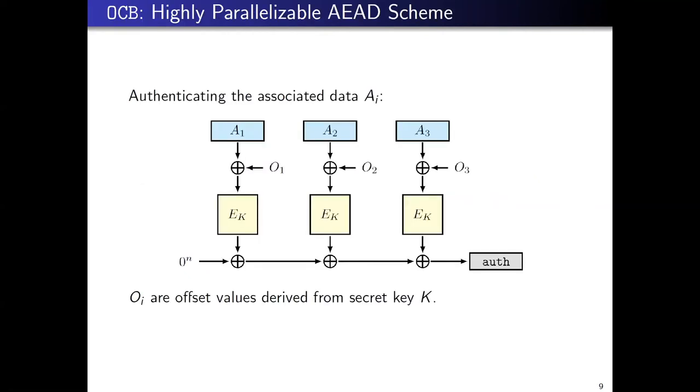First I'll talk about OCB mode. It's highly parallelizable. As you can see here, to authenticate the associated data, you partition the associated data into blocks, then XOR with some offset value derived from the secret key and encrypt it. Then you XOR everything to get the authentication value.